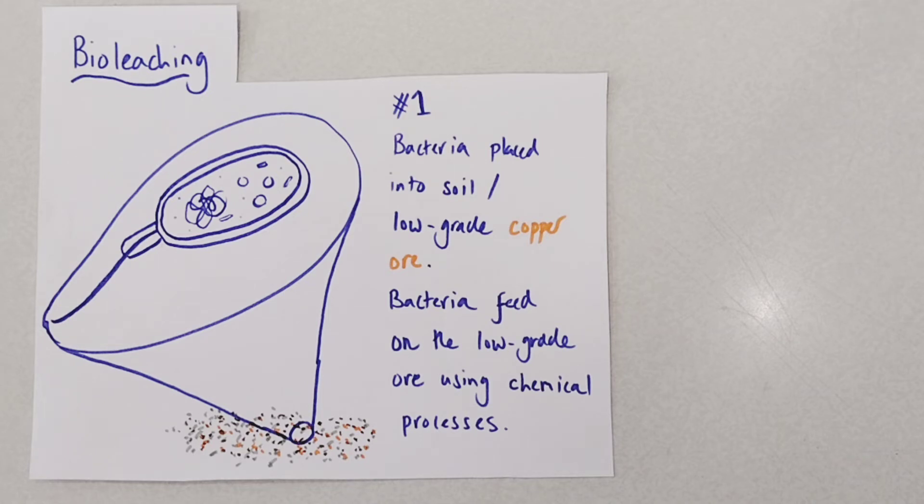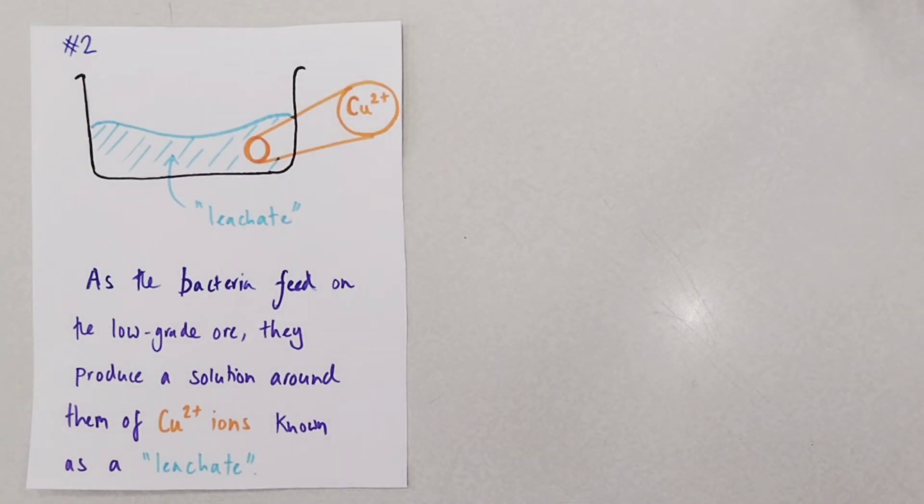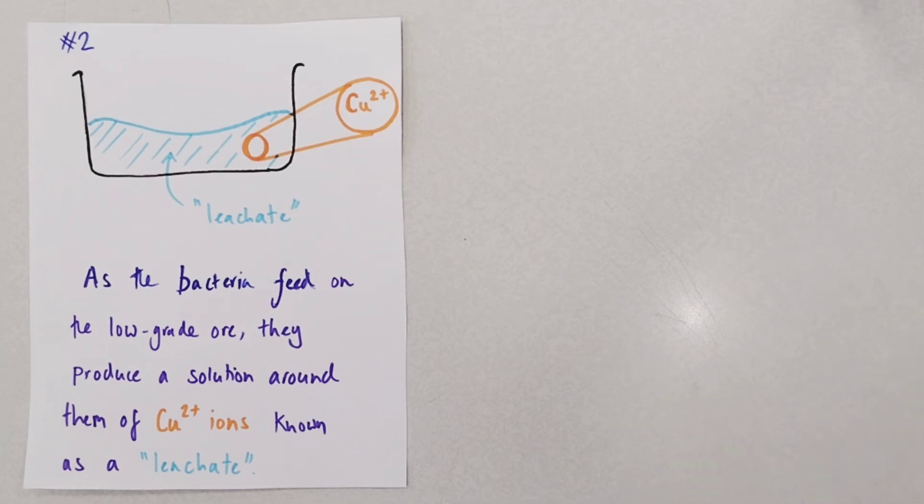The bacteria actually feed on that low-grade ore to provide energy for their metabolic processes using chemical processes to break down the compounds around them. As the bacteria feed on that low-grade ore they do produce a solution around them of Cu2+ ions. This solution is known as a leachate and it contains lots of copper ions in that solution.